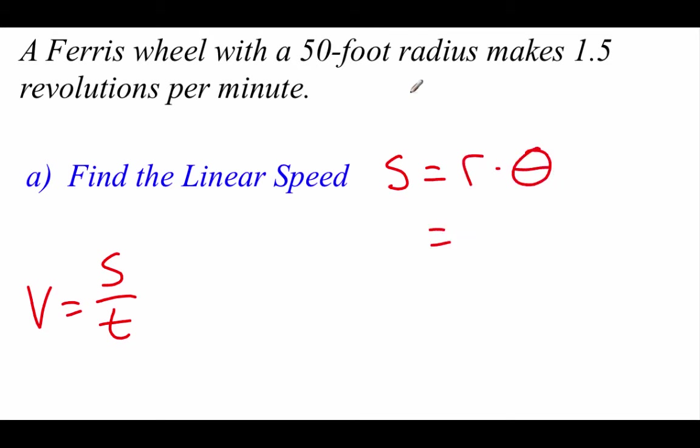We were told earlier that our radius was 50 feet. Our theta comes from making those one and a half revolutions. If you think about that circle, one revolution is two pi, another half a revolution would be another pi. So all in all, we've got three pi. Now if we multiply these together, we get an s value of 150 pi feet.